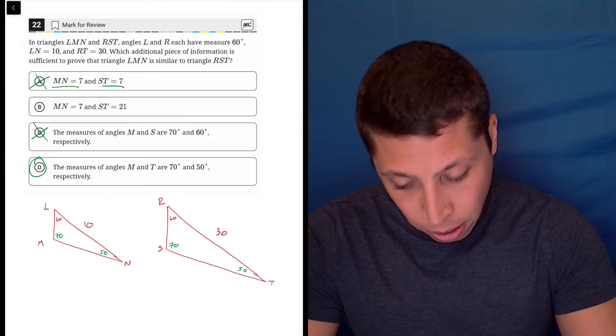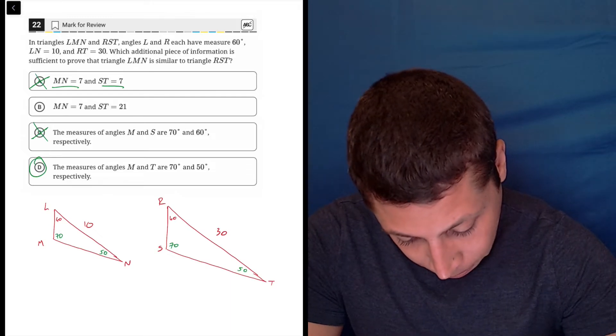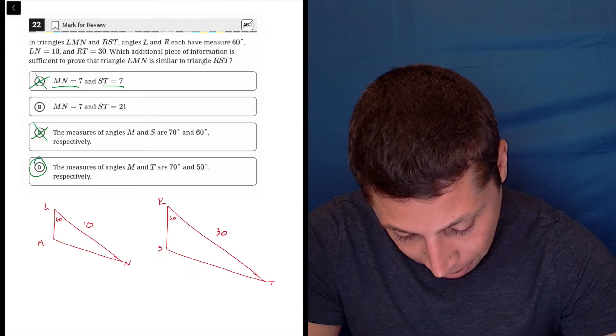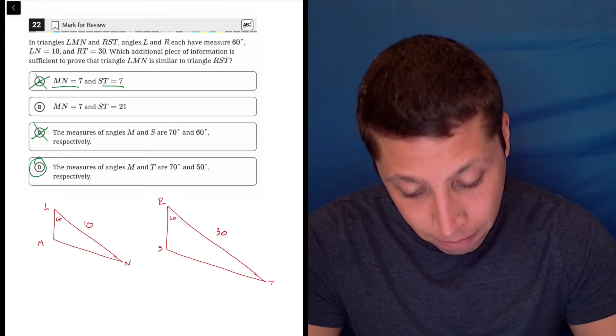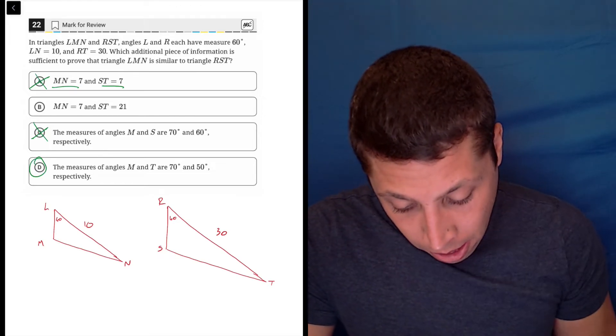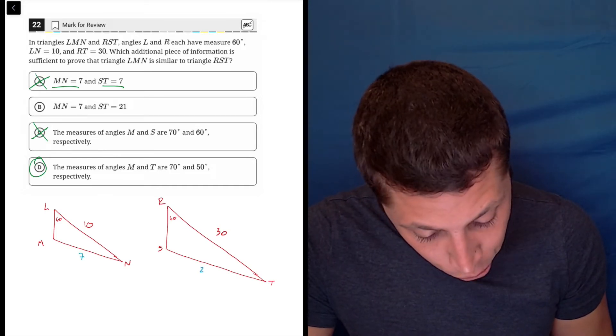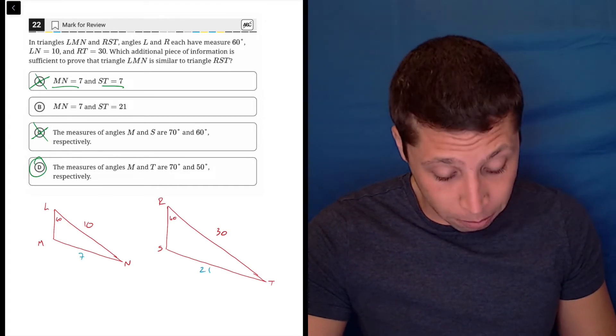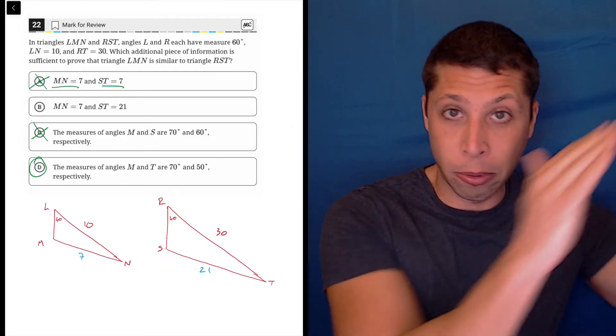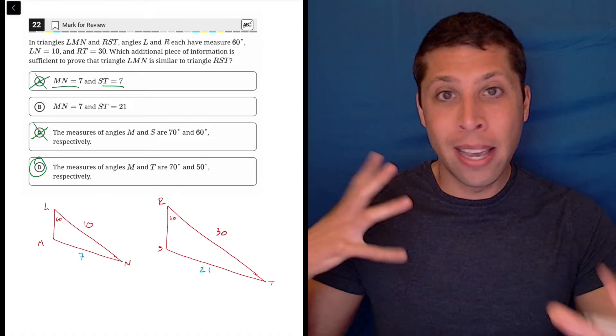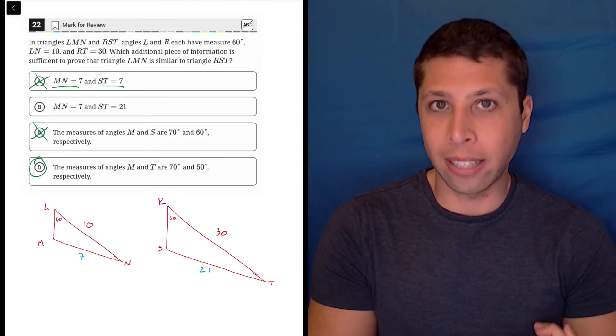Explaining why B is wrong is kind of hard though, so let me get rid of these angles that I just drew, clear it out again, and let's talk about what could happen with choice B. If MN were 7 and ST were 21, it would kind of look like these things are similar, right? The 10 times 3 would be 30, the 7 times 3 would be 21, we've got an angle that's the same, seems like these things are looking like similar triangles.